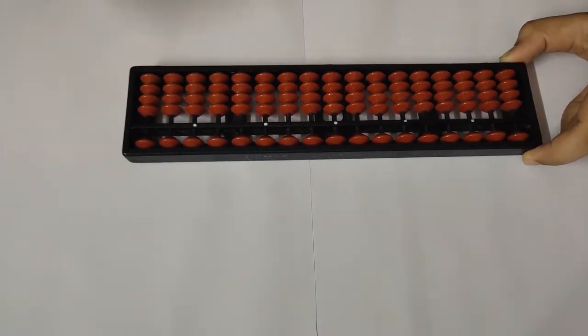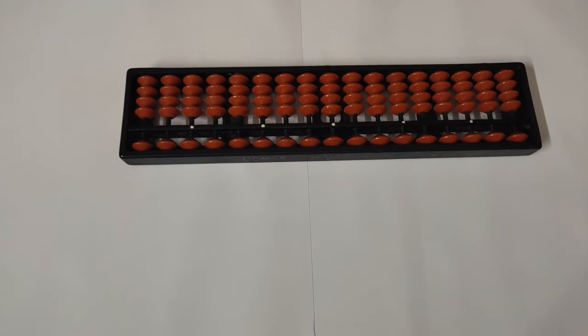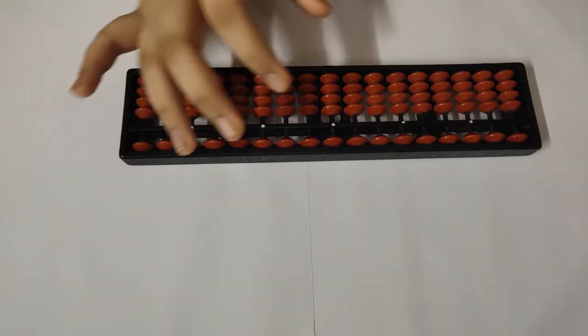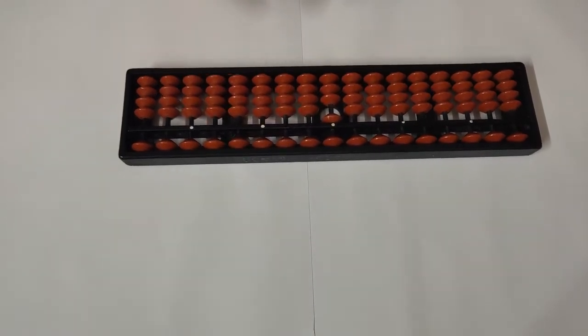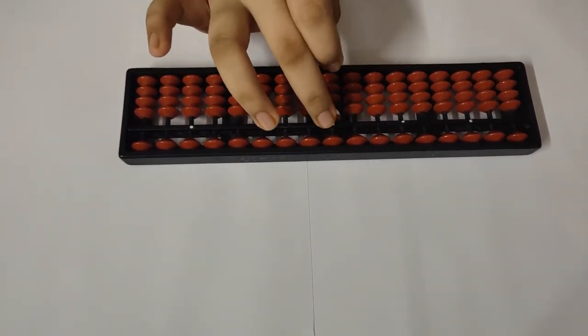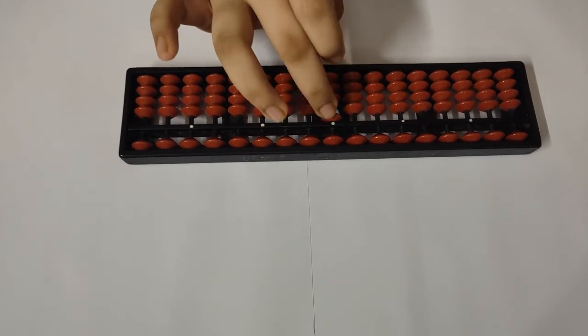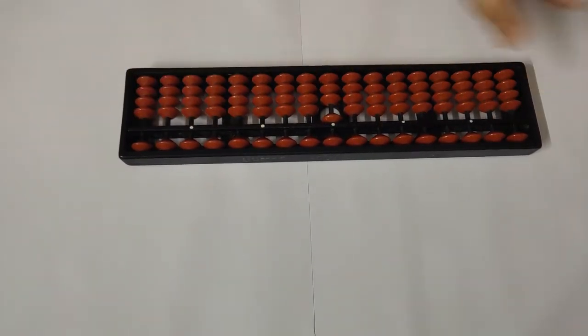So you can set your abacus very easily. Now we will visualize numbers in an abacus—we will learn how to see numbers. This is basically one. I'm considering this as one space, so this is one. But whenever you consider any other column, the one will be there.